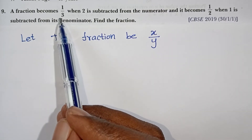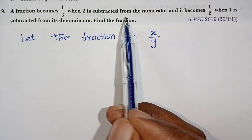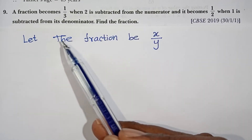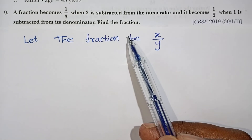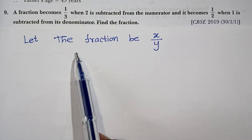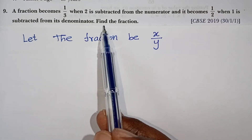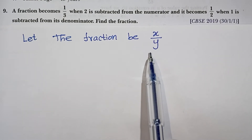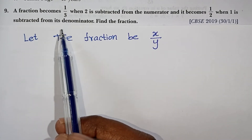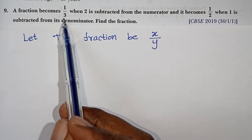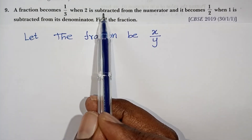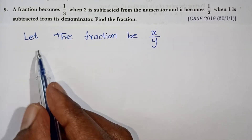Next question: a fraction becomes 1 by 3 when 2 is subtracted from the numerator, and it becomes 1 by 2 when 1 is subtracted from its denominator. Find the fraction. This is a repeated exam question.